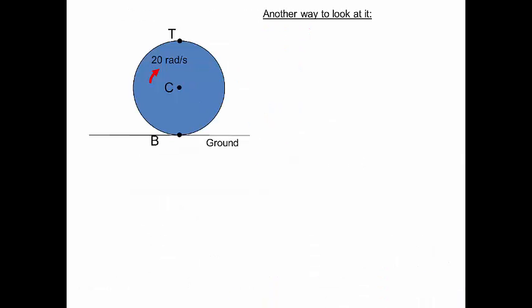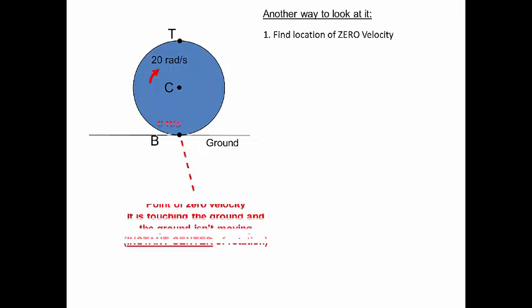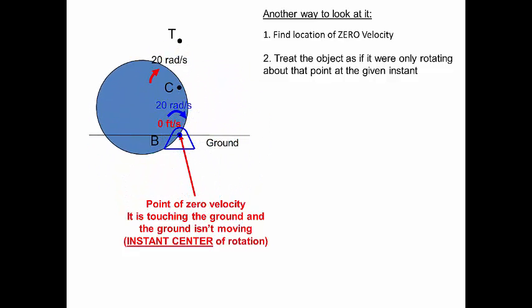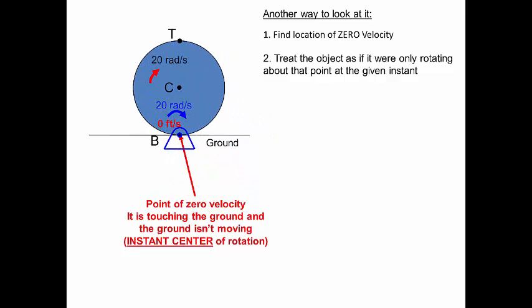Let's look at this in a different way. What if we found the location of zero velocity? That point is at the ground, because the ground is not moving. At this instant, it is the center of rotation. We treat the object as if it were only rotating about that point at the given instant. Let's put a pin there to illustrate, and move our angular velocity to show that it's rotating about that point.